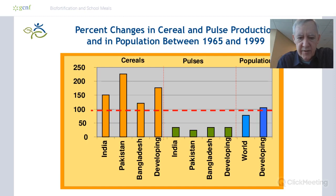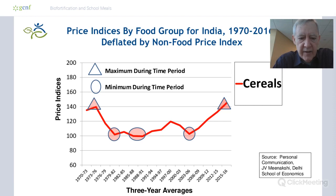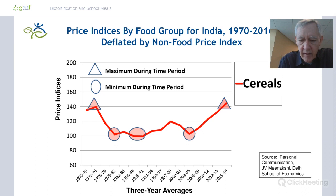So what happens to food prices when you have that kind of a shift in supply and demand? Here are some price data for India showing that rice prices and wheat prices fell dramatically by 40% once the high-yielding varieties came online. Cereal prices remained low in India for many decades, and more recently they're starting to come back up — but only to the level they were in the early 70s. This pattern holds across South Asia and Africa.